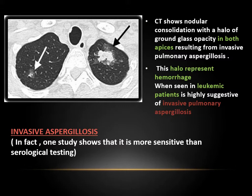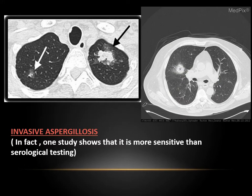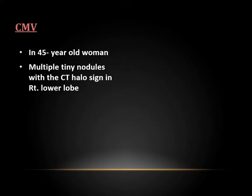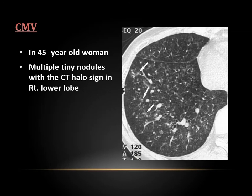This patient shows nodules in the apices of both lung fields, both showing a CT halo sign — this is a leukemic patient. Another CT scan also demonstrates this halo sign. In the literature, finding this sign is noted to be more sensitive than serological testing itself. This is a large case of septic emboli with multiple nodules of different shapes, and as you can see, this pleural-based nodule is also surrounded by ground glass attenuation. This case of cytomegalovirus shows small tiny nodules also surrounded by the CT halo sign, mainly in the right lobe.